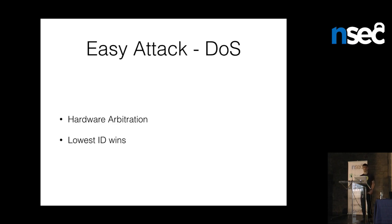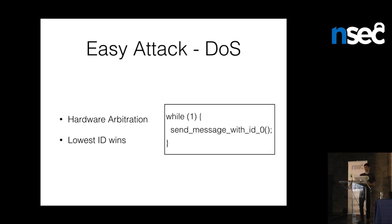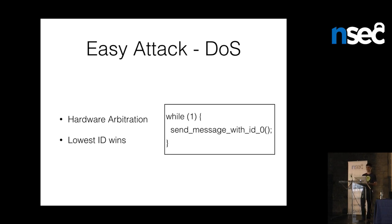This brings us to the first really easy thing you can do if you're on a CAN bus: a denial of service. CAN is multi-master, so if you take a controller off the bus it will still work. Arbitration is done at the hardware level — whoever has the lowest CAN ID wins and gets to send. Which means you can just forever send ID 0, and in cars this causes pretty bad things. I've done it by accident once — it set every single fault code on the car. All the lights came up, check engine, service stabilitrak. It's not a good idea, but it's the simplest thing you can do.